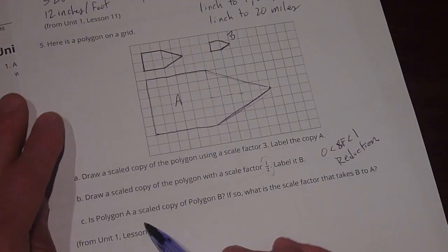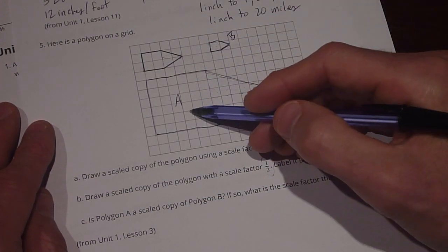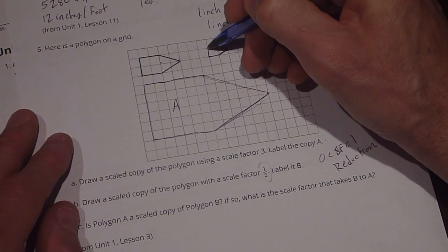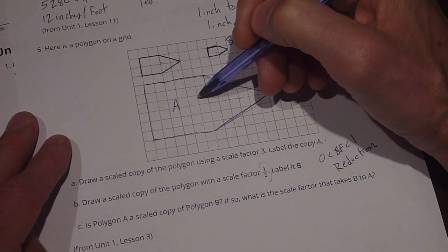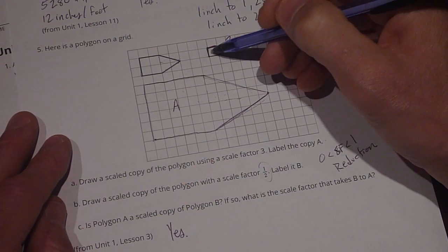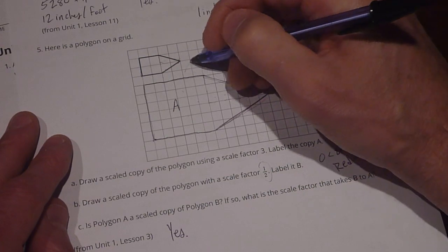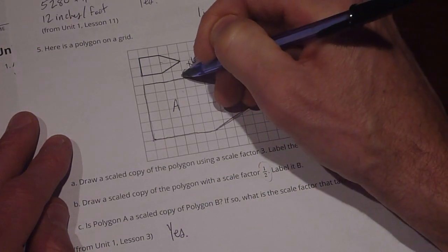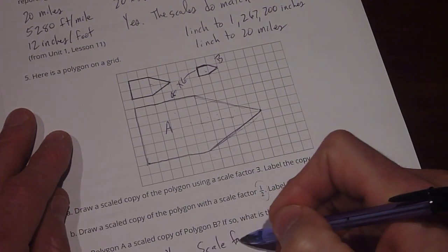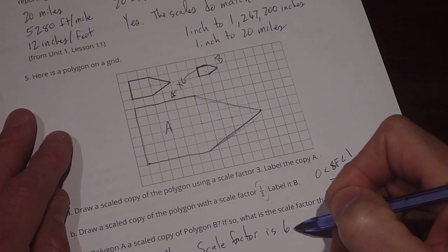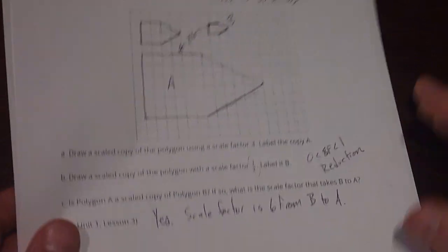And C says, is polygon A a scaled copy of polygon B? If so, what is the scale factor that takes B to A? Well, I need to think about this. So first, I know they're scaled copies because they're both scaled copies of the original. So yes, they are scaled copies. And the scale factor here, if this side is 1 and this side is 6, then I have to multiply everything times 6 to go from B to A. So the scale factor is 6 from B to A. And that's that.